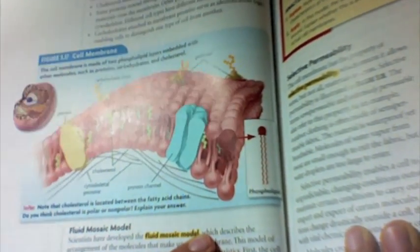Cholesterol is quite important in cell membranes. And lastly, going back to my diagram, if you see here, this straw-like thing is a protein channel.